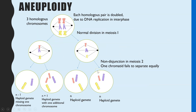As with polyploidy, non-disjunction can also happen in meiosis 2 for aneuploidy. In this case, the chromosomes separate equally in meiosis 1, but in meiosis 2, one cell has all chromatids separate equally producing two haploid gametes, while in the other cell one chromatid fails to separate equally, resulting in N minus 1 and N plus 1 gametes.